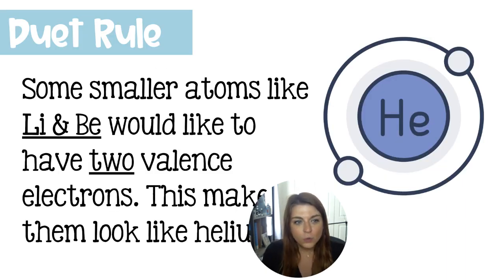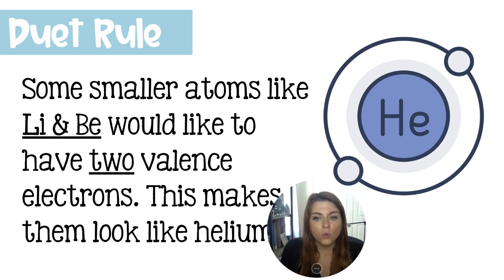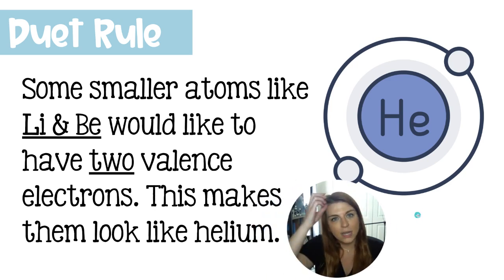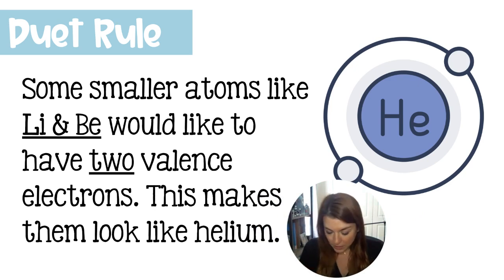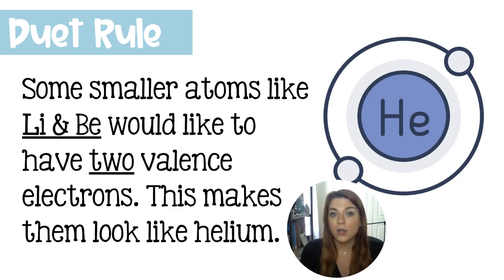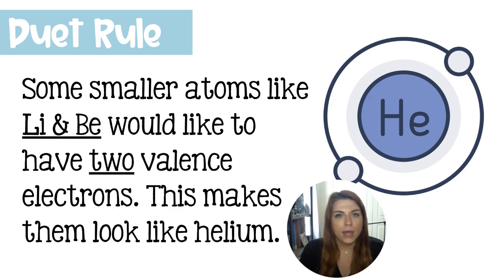There are a few atoms that are too small for eight valence electrons, so instead they're going to look to have just two valence electrons, which would make them look like helium. Hydrogen sometimes will ditch all of its electrons altogether, but it can gain just one to look like helium. And then lithium and beryllium are our primary elements that follow what we call the duet rule.